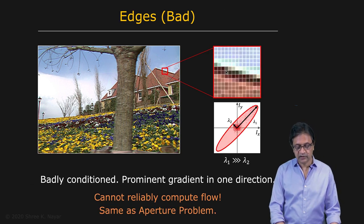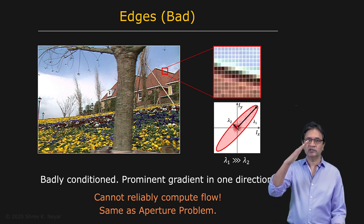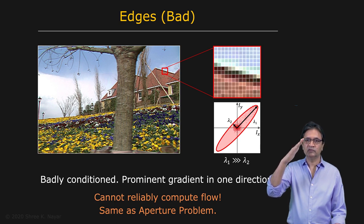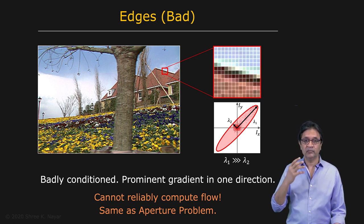There's another type of bad region where you have an edge. So an edge, of course, has a very clear visual feature. But when you look at the gradients in this case, you have strong gradients in one direction but you have weak gradients in the other direction. So the problem really here is that if you have this edge, it's very hard to know whether the edge actually moved this way or it's actually moving diagonally this way even faster. So both of them will produce the same apparent changes in the brightness in the two different images.